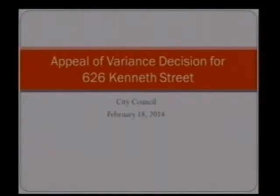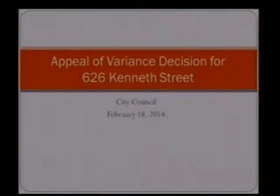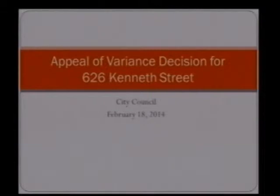Good evening, Mr. Mayor and Councilman. Before you tonight is an appeal of a variance decision for a parcel at 626 Kenneth Street. This variance was denied by the Board of Adjustment on November 21st, 2013. For everyone's understanding, I'd like to provide first the definition of a variance from the Idaho State Code, Section 67-6516. A variance shall not be considered a right, but may be granted only upon a showing of undue hardship because of characteristics of the site and that the variance is not in conflict with the public interest.